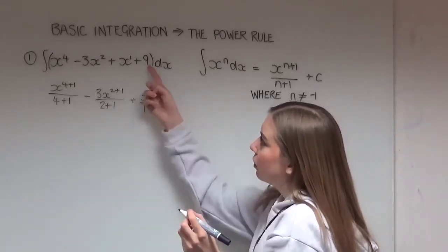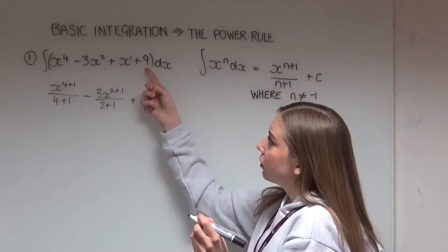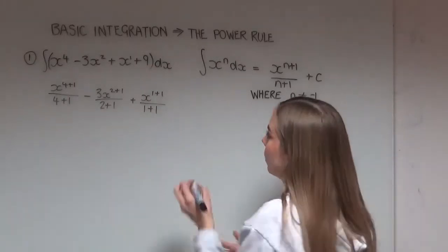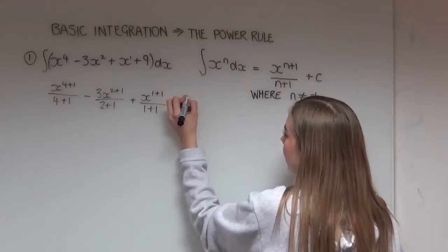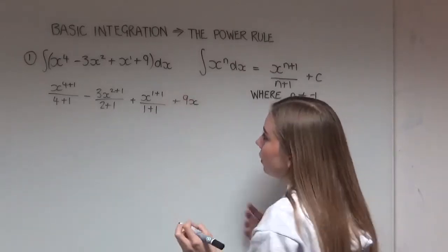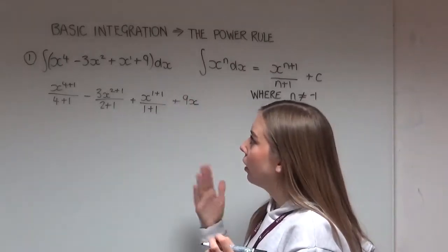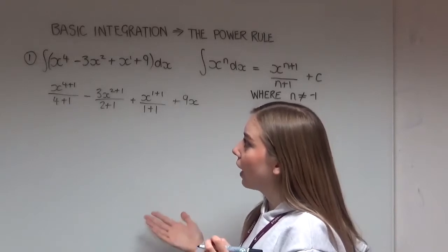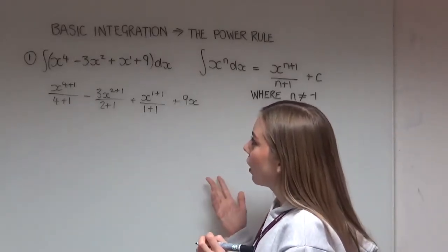Then when you have any number on its own, to integrate it, it just goes to that number multiplied by x. So this goes to 9x. That's true for any number, so it could be 1, that would integrate to x, or 5, that would integrate to 5x, and so on.